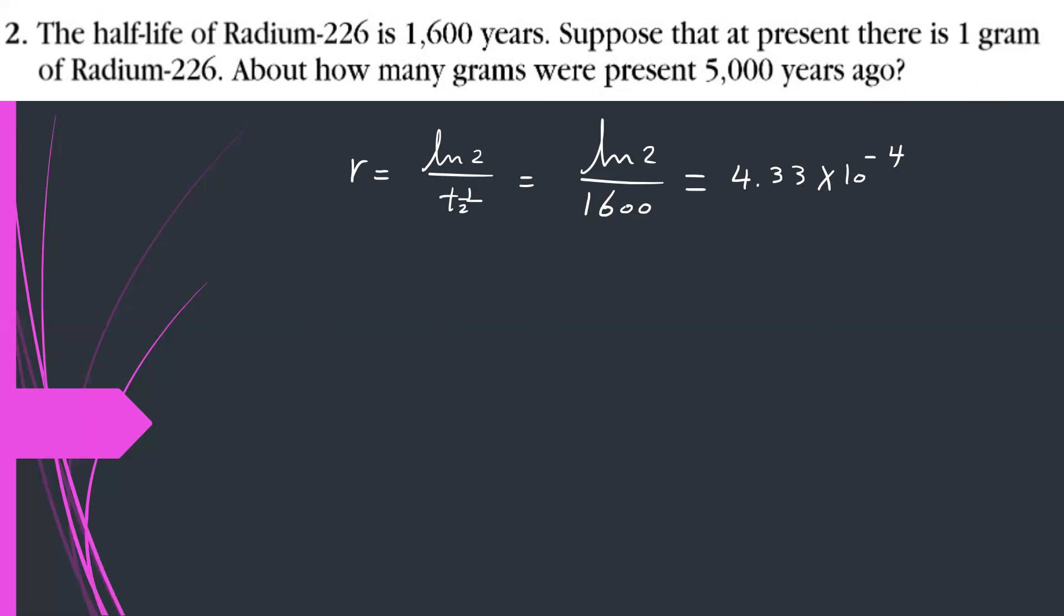Suppose that at present, there is 1 gram. At present, this is the recent amount of radium-226. About how many grams were present 5,000 years ago? He asks now about the initial amount. Q naught now, I don't know. So, according to the formula, Q(t) equals Q naught e to the negative rt. Q naught e to the negative, 4.33 times 10 to the negative 4 times t, which is 5,000 years.